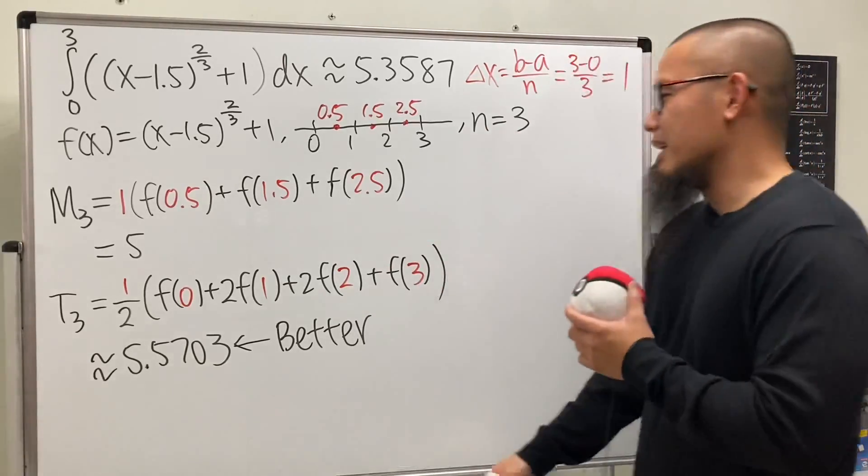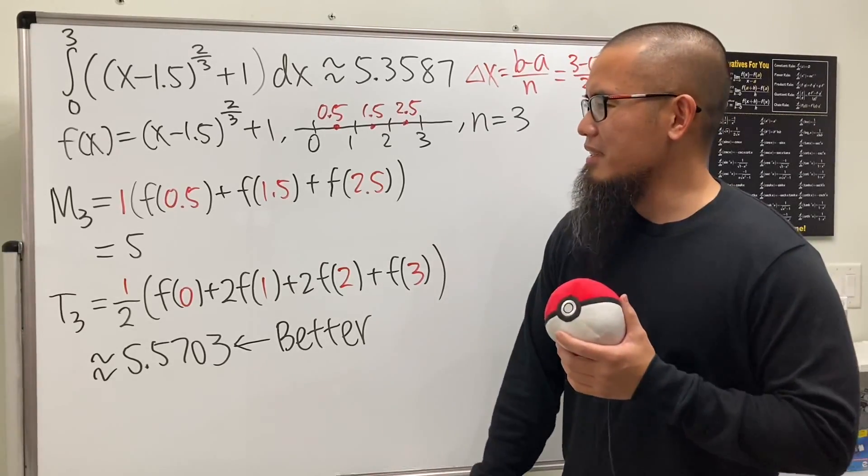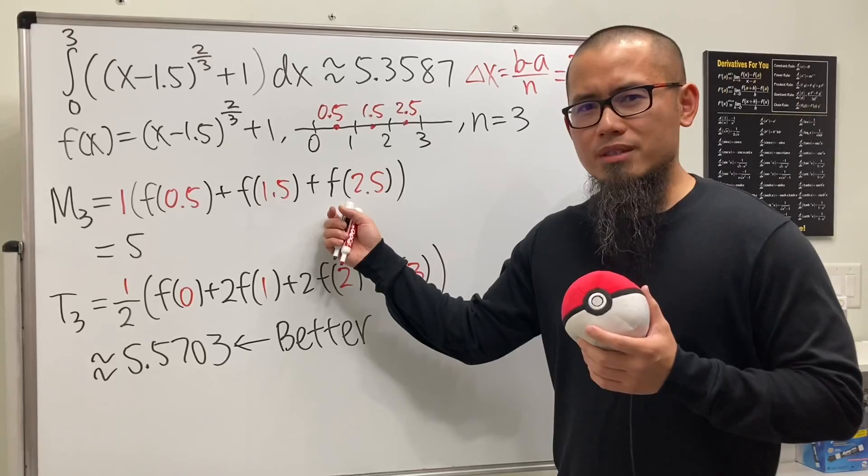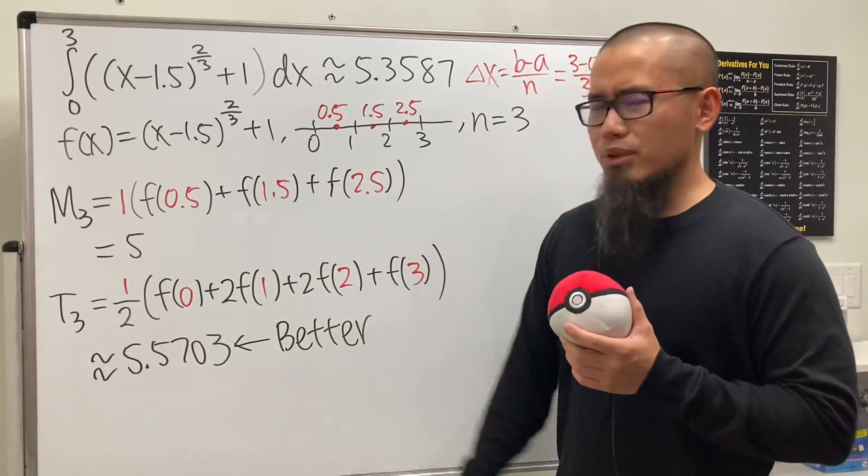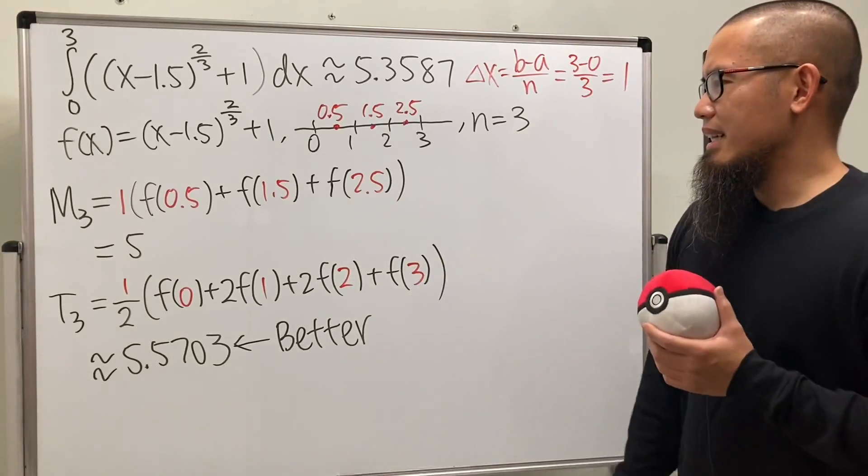This example is not a boring one; it's actually very interesting—it has a curve at least. But let's talk about why this is the case. Isn't it that we've been talking about the midpoint rule being better than the trapezoidal rule? How come this time it didn't do its job?